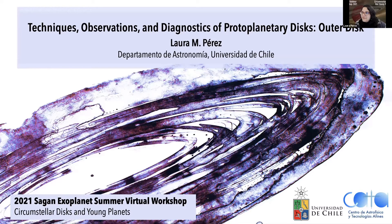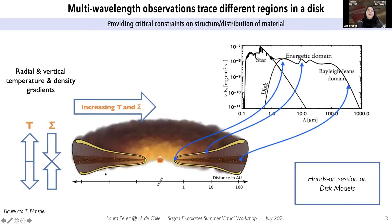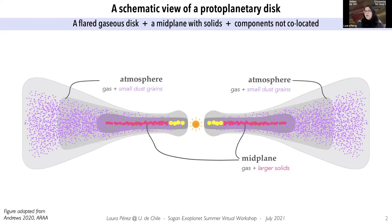Thank you, Tom. Thank you to the organizers for this opportunity to come tell you about how we probe the outer disks using different techniques, observations, and diagnostics. To begin, what we really need is to look at a schematic view of a protoplanetary disk, because the different components that we observe are not co-located. We have a flared gaseous disk that extends quite broadly and a mid-plane with solids that are actually more compact and vertically very settled.